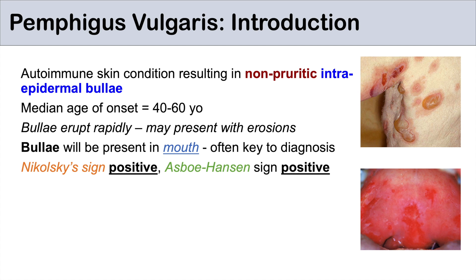A couple of other key distinguishing features of pemphigus vulgaris are the Nikolsky sign and the Asboe-Hansen sign — clinical signs you can assess when you check the bullae on a person's skin. With the Nikolsky sign, you take your finger and apply traction to the bullae; when positive, this causes the bullae to erupt. With the Asboe-Hansen sign, if you put pressure on the bullae, it will actually extend outward. Both of these clinical signs are positive with pemphigus vulgaris.